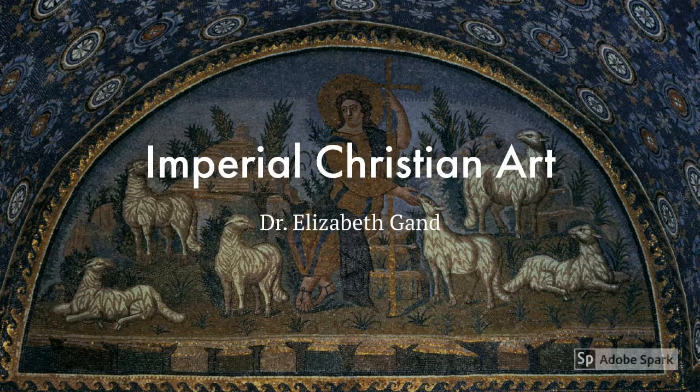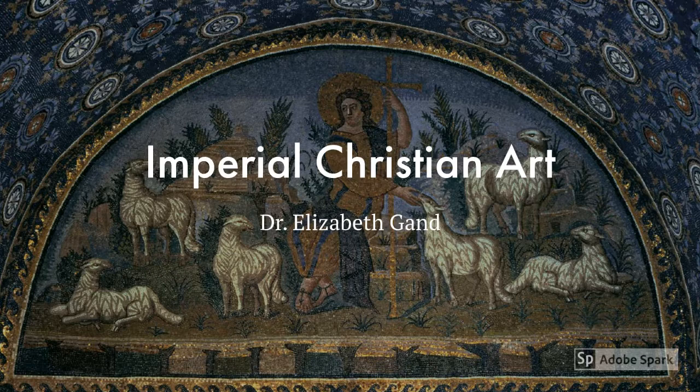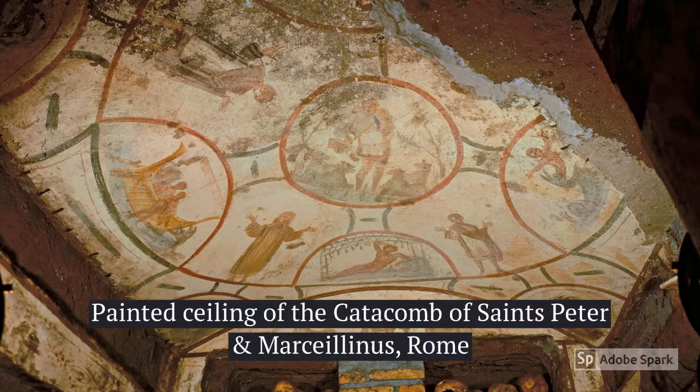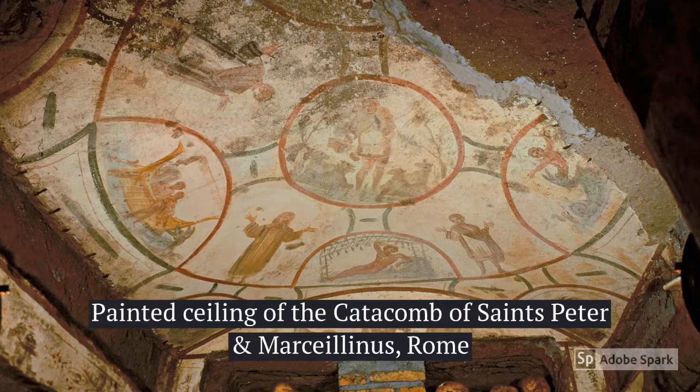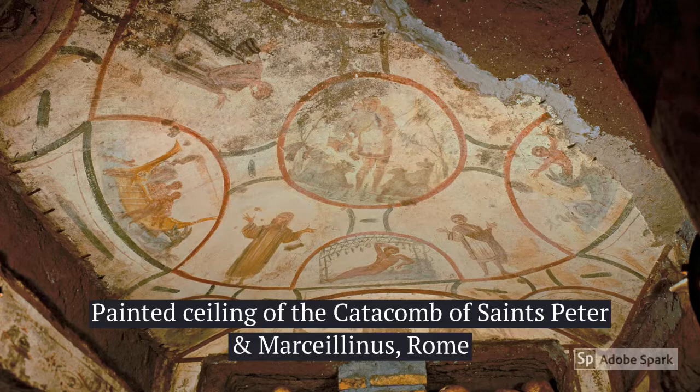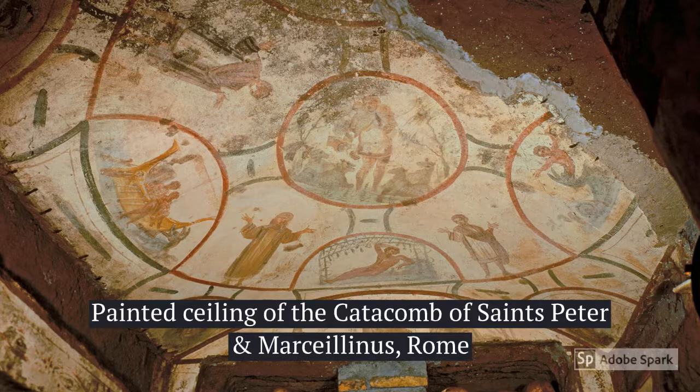From the 200s to the 300s, early Christian artwork changed dramatically. It became more opulent and grandiose. Whereas once it had served an outsider audience, it became the religious art of the ruling class. Consider, for example, the painted interiors of early catacombs. The paintings are fresh and powerful in their simple folk art style, but the artists were limited to inexpensive materials, water-based paint in basic earth tones, and they used simple, sketchy forms.